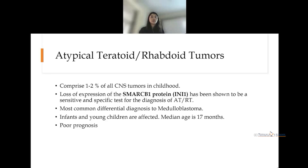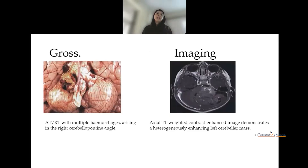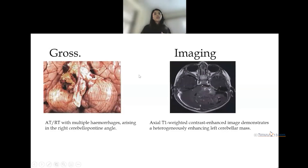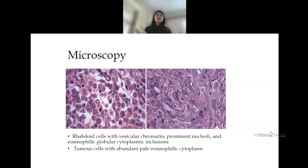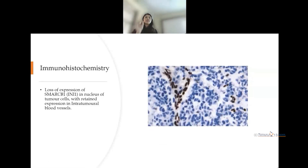Grossly, ATRTs are present in the cerebellum and around the cerebellopontine angles, with multiple hemorrhages. On T1-weighted imaging it demonstrates a heterogeneously enhancing cerebellar mass. Microscopically, these tumors characteristically show eccentrically located nuclei with vesicular chromatin and conspicuous nucleoli, abundant eosinophilic cytoplasm, and eosinophilic cytoplasmic inclusions. On immunohistochemistry, SMARCB1 staining shows loss in all tumor cells; only intratumoral blood vessel endothelial cells are highlighted.